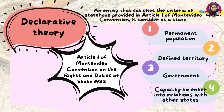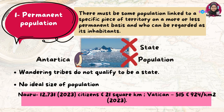Under the declarative theory, an entity that satisfies the criteria of statehood as provided under Article 1 of the Montevideo Convention will be considered a state. The four requirements are: number one, permanent population; number two, defined territory; number three, effective government; and number four, capacity to enter into relations with other states. There must be some population linked to a specific piece of territory on a more or less permanent basis and who can be regarded as its inhabitants.